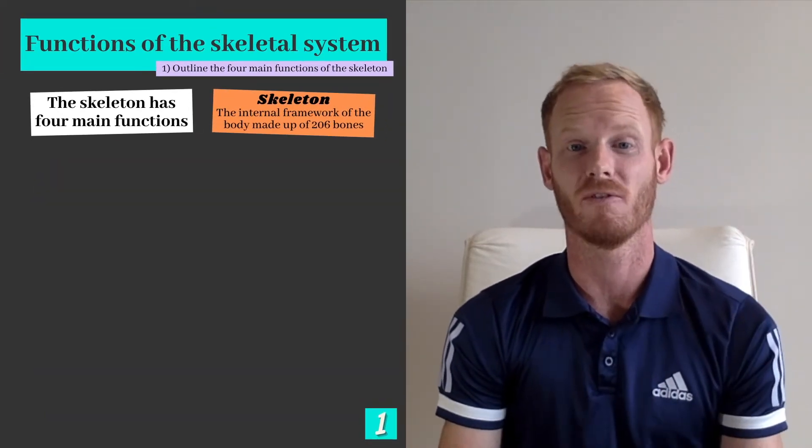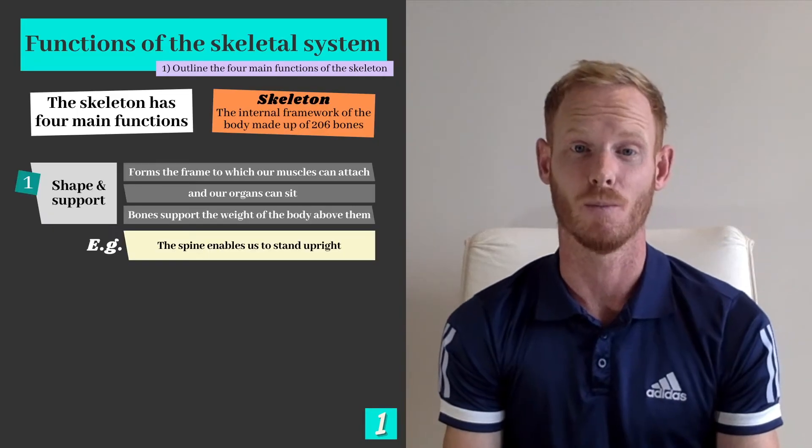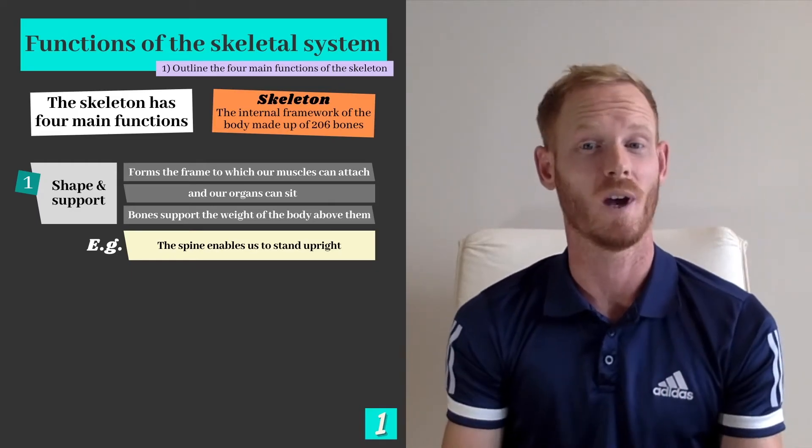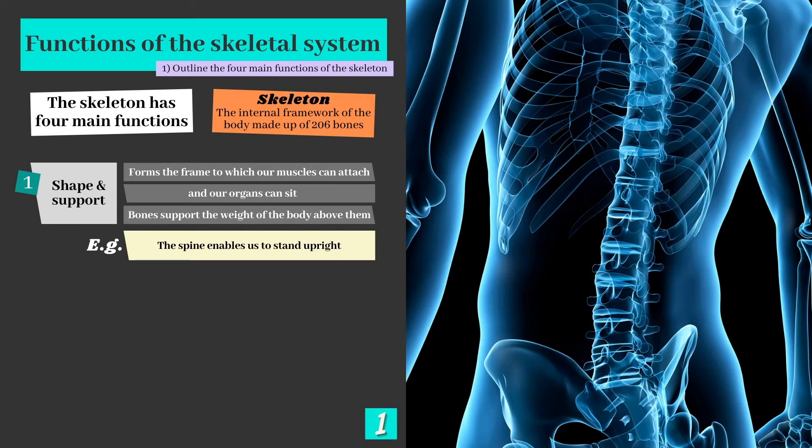Now the skeleton has four main functions, the first being shape and support. The skeleton forms the frame which our muscles can attach to and our organs can sit. Bones also support the weight of the body above them, such as the spine, which enables us to stand upright.